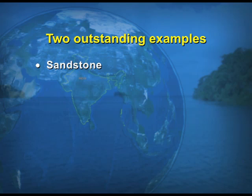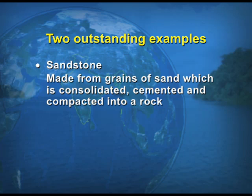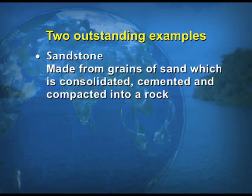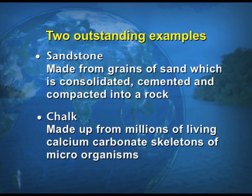There are two outstanding examples of sedimentary rocks. One is sandstone and another is chalk. Sandstone is made from grains of sand which are consolidated, cemented, and compacted into a rock. Cementation means it becomes hard because of the pressure of the upper layer. Chalk is made up of millions of living calcium carbonate skeletons of microorganisms.